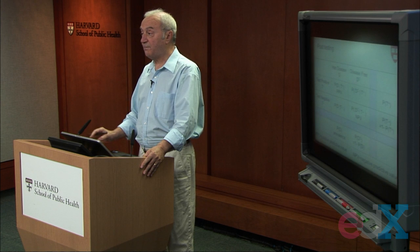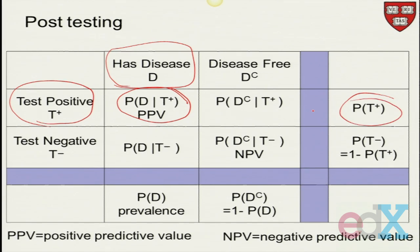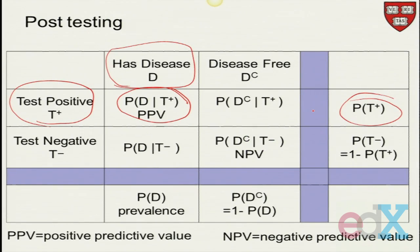After testing, post-testing, or posterior post-testing, what happened here? Of those who have the disease, how many tested positive? That's this quantity here: probability of the disease, given that you've tested positive. So here we look at everybody who tested positive along that row. How many actually have the disease? What proportion have the disease? That's this quantity here. That's called the PPV, the positive predictive value.